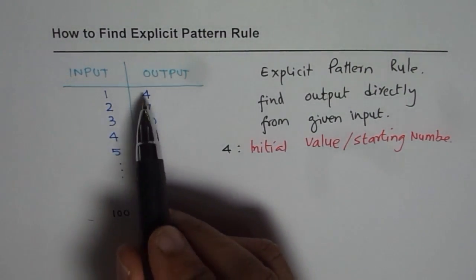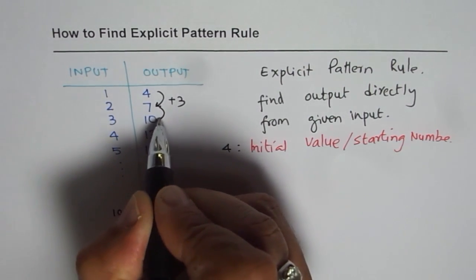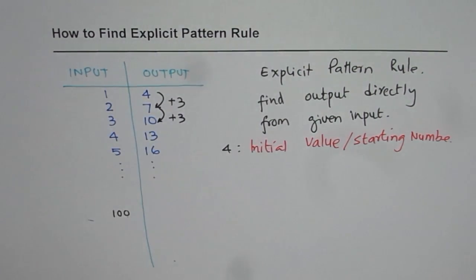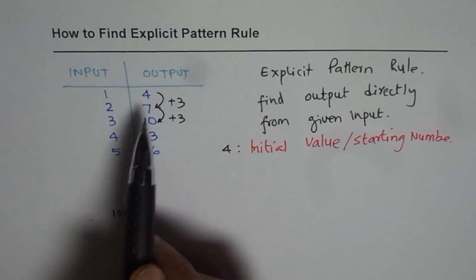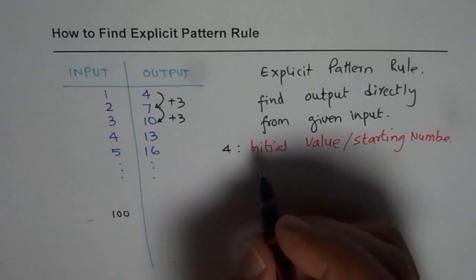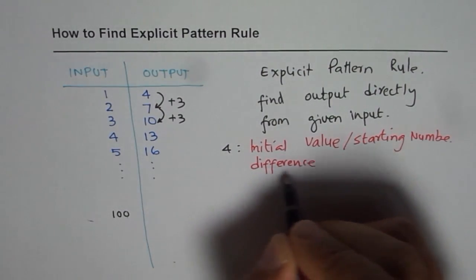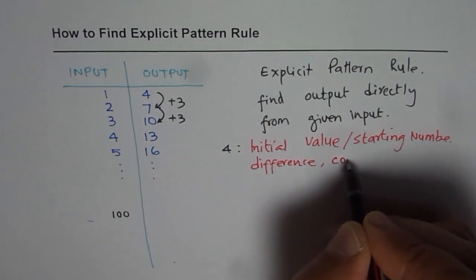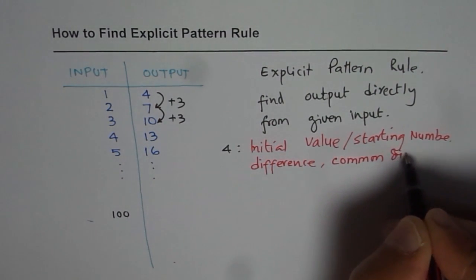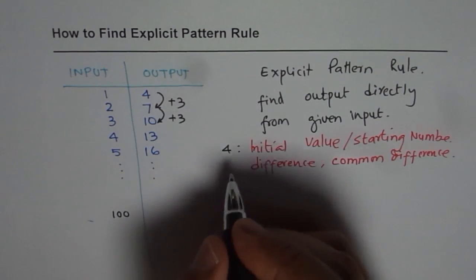And then what we see is how do we get the next number? We get the next number by adding 3. So every time if I add 3 I get the next output. So that we call is the difference between the two consecutive numbers, the numbers which come together in the output. So that is what we call as the difference or rather common difference. So difference is constant. In our case the common difference is 3.